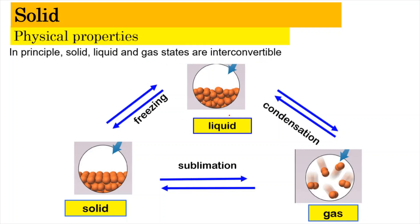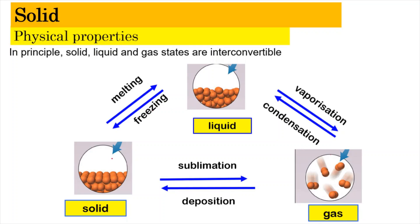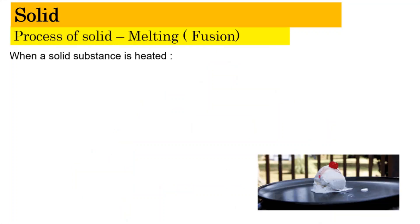In principle, solid, liquid, and gas states are interconvertible. A solid can be converted into liquid by melting, liquid into gas by vaporization or boiling, and gas back to solid by deposition. Similarly, solid can sublime into gas, gas can condense into liquid, and liquid can freeze into solid.